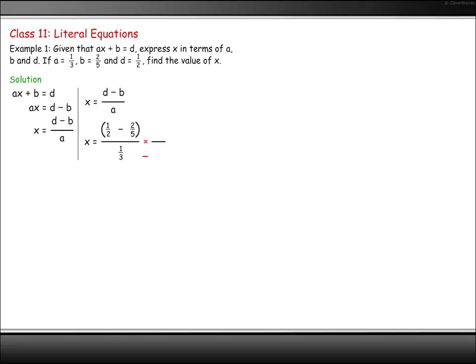Multiply above and below by 30. This will get rid of all the little fractions. 30 by 1/2 is 15. 30 by -2/5 is -12, and 30 by 1/3 is 10. The answer is 3/10.